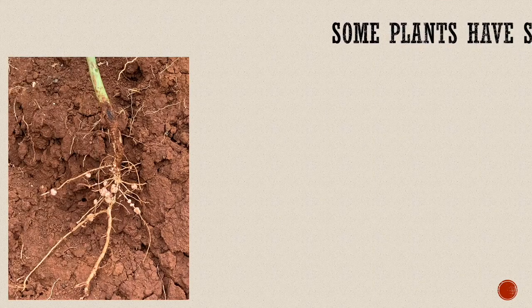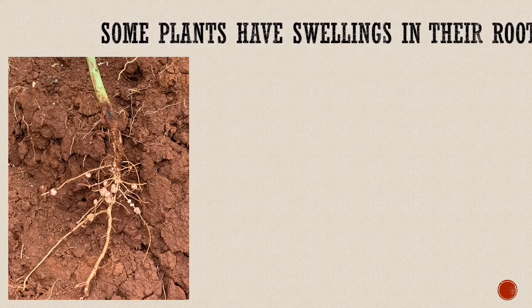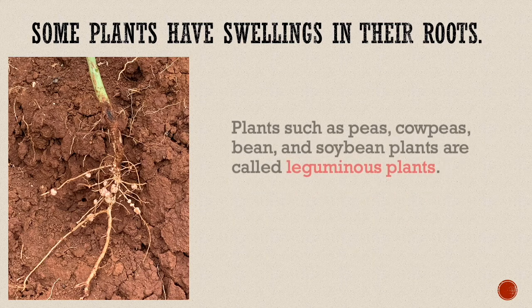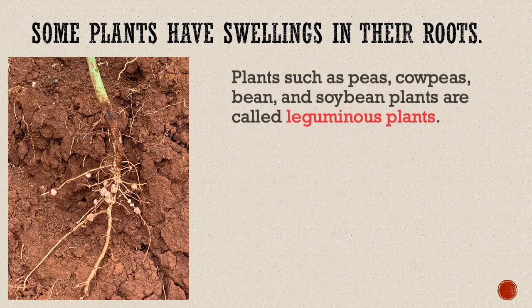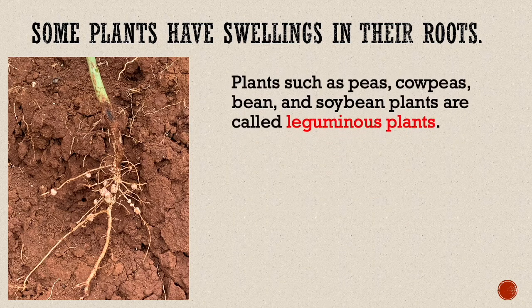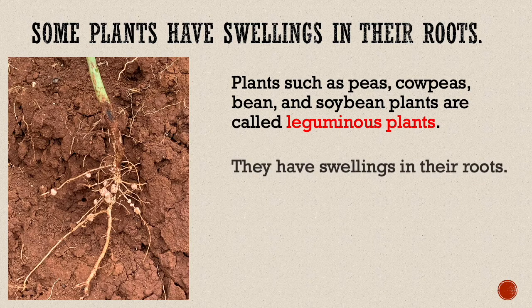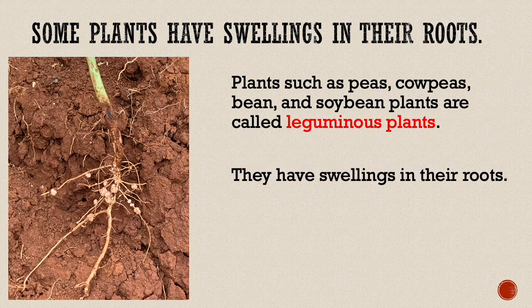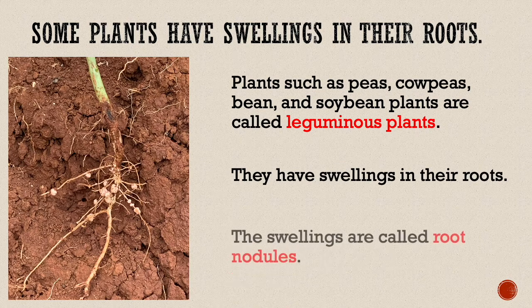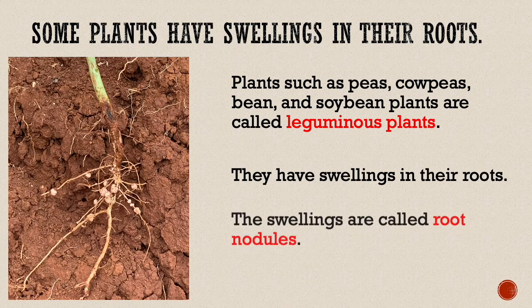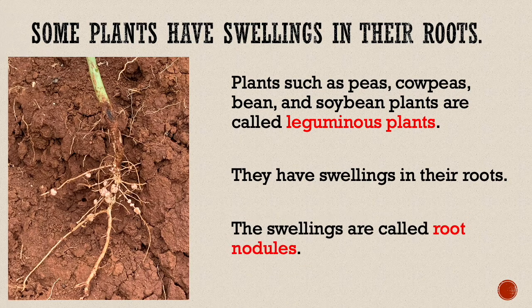Some plants have swellings in their roots. Plants such as peas, cowpeas, bean, and soybean plants are called leguminous plants. They have swellings in their roots. The swellings are called root nodules.